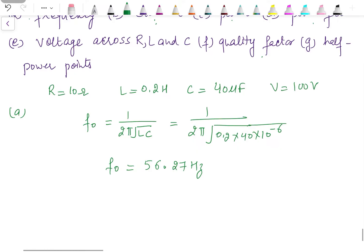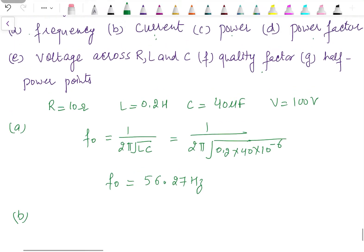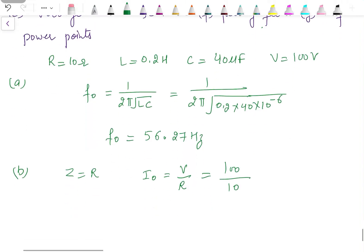The second part asks us to find the current at resonance. At resonance, the impedance of the circuit is equal to the resistance, and the current at resonance is given by I₀ = V / R. So V is 100 and R is 10, giving current at resonance as 10 ampere.